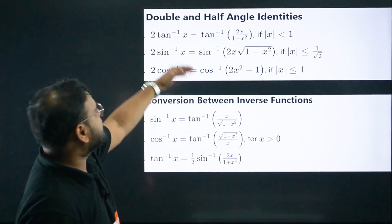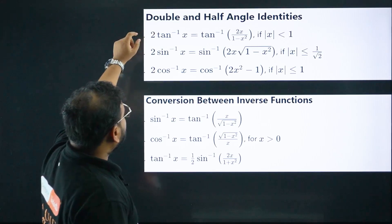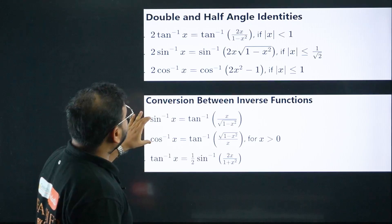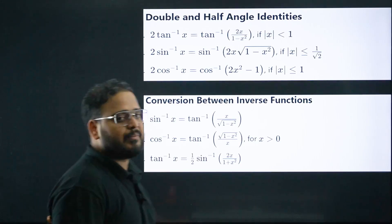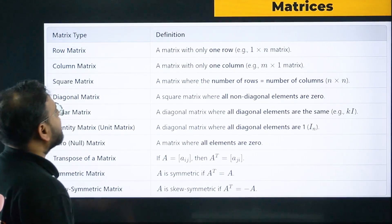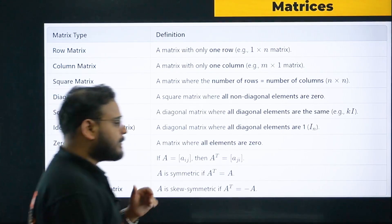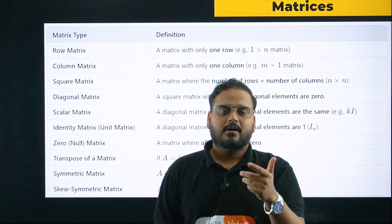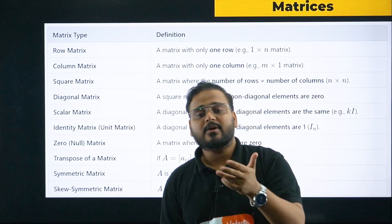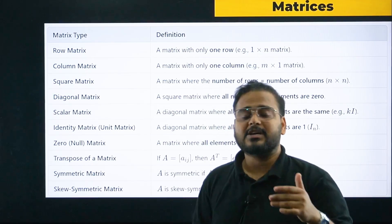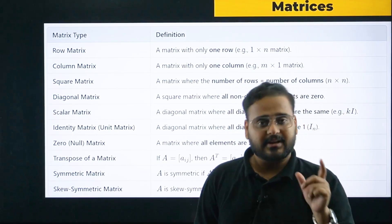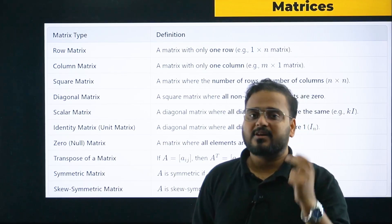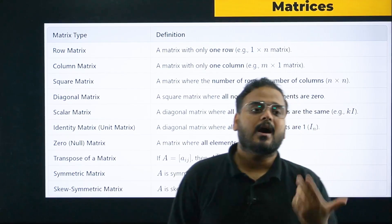For double and half angle: 2 tan⁻¹ of a value is an important formula. The sin inverse formula expressed in terms of tan is also important, and cos inverse in terms of tan is also important — all three of these are highly important formulas. For matrices, the key things to know are: skew-symmetric matrix properties, symmetric matrix properties, complement of a matrix properties, and matrix multiplication.